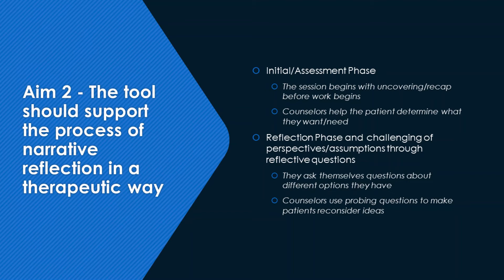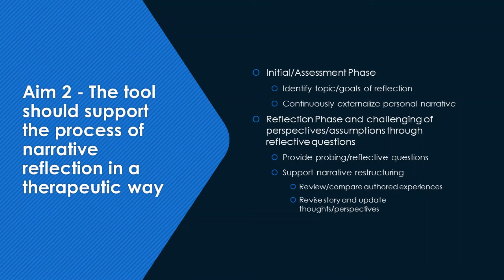Our second design aim was that the tool should support the process of narrative reflection in a therapeutic way. Through this aim, we identify key aspects of the reflection process undertaken by college students that the tool should aim to support. Our codes indicate the existence of an assessment series where the student reviews their experiences and the goals of reflection. This is followed by a second phase where the bulk of reflection exists and the narrative branches into future possibilities through asking what options there are. In the second phase, it is important to challenge the student's perspectives or assumptions, similar to how counselors use probing questions to make patients reconsider their thoughts and ideas. Thus, the tool should begin the assessment phase by aiding the author in identifying the topic or goals of reflection.